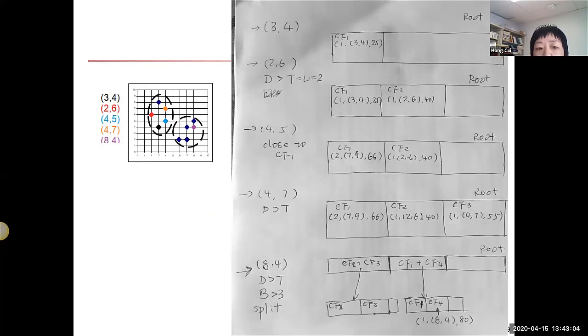I'm going to show one example using this color-coded set of five values. We start with three and four. At the very beginning, the root is empty. We add three and four here and compute the first CF, which we call CF1. N is one, and three and four is the linear sum, then the square sum.